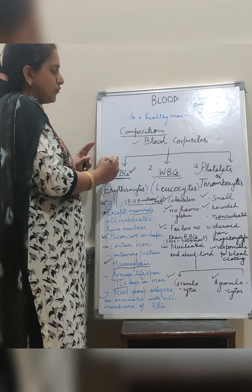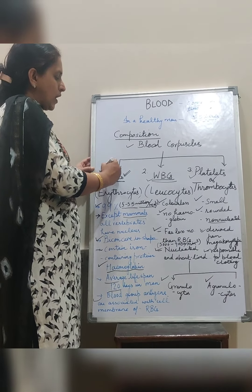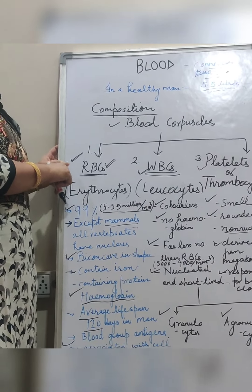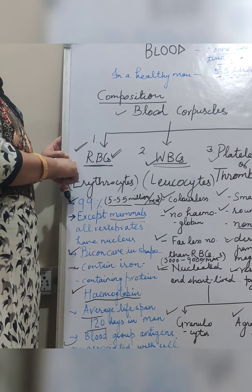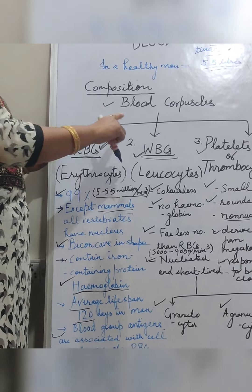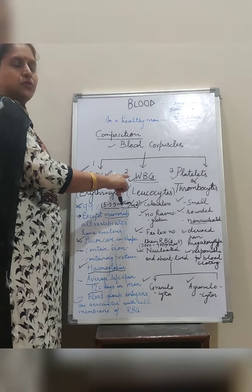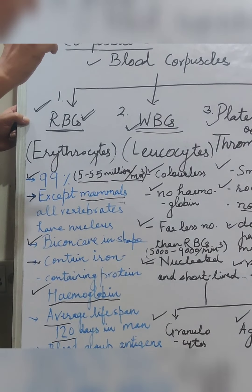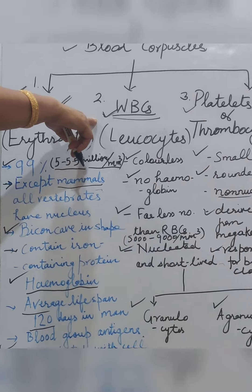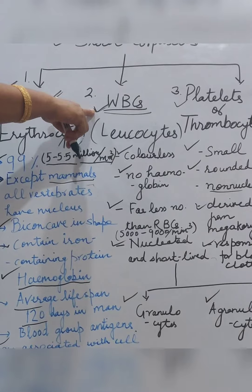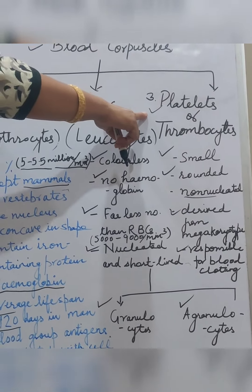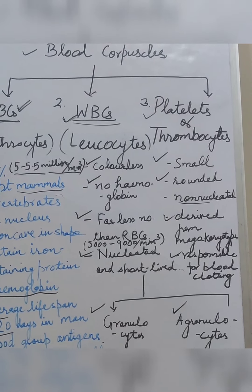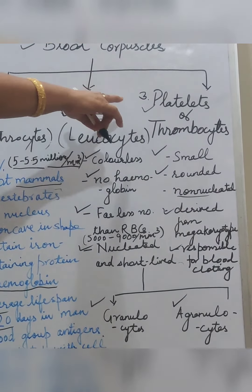In summary, blood corpuscles are of three categories: RBC, WBC, and platelets. RBCs are most numerous and carry oxygen. WBCs are fewer in number and fight against antigens and infections that enter the body, protecting it. Platelets are the third category — when an injury occurs and blood flows, they help in clotting.